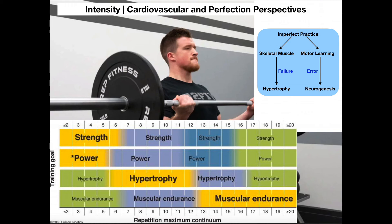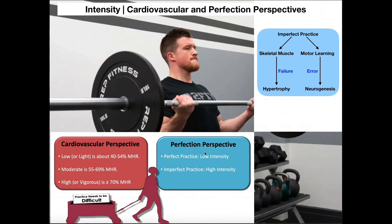That's the big point with imperfect practice. But do you always want to push someone to a high intensity, whether from a perfection or cardiovascular perspective? The answer is no. For example, if we have a person with low cardiovascular endurance — maybe an elderly person at risk for falling — we don't want to necessarily push them to high intensity because they don't have the cardiovascular stamina. Depending on the situation, maybe low or moderate intensity is sufficient. But the big takeaway is that in order to have neurogenesis, in order to learn, you have to have error. Hopefully this gave you a good understanding of practice intensity from both cardiovascular and perfection perspectives. Please make sure to like this video and subscribe to my channel for future videos and notifications.